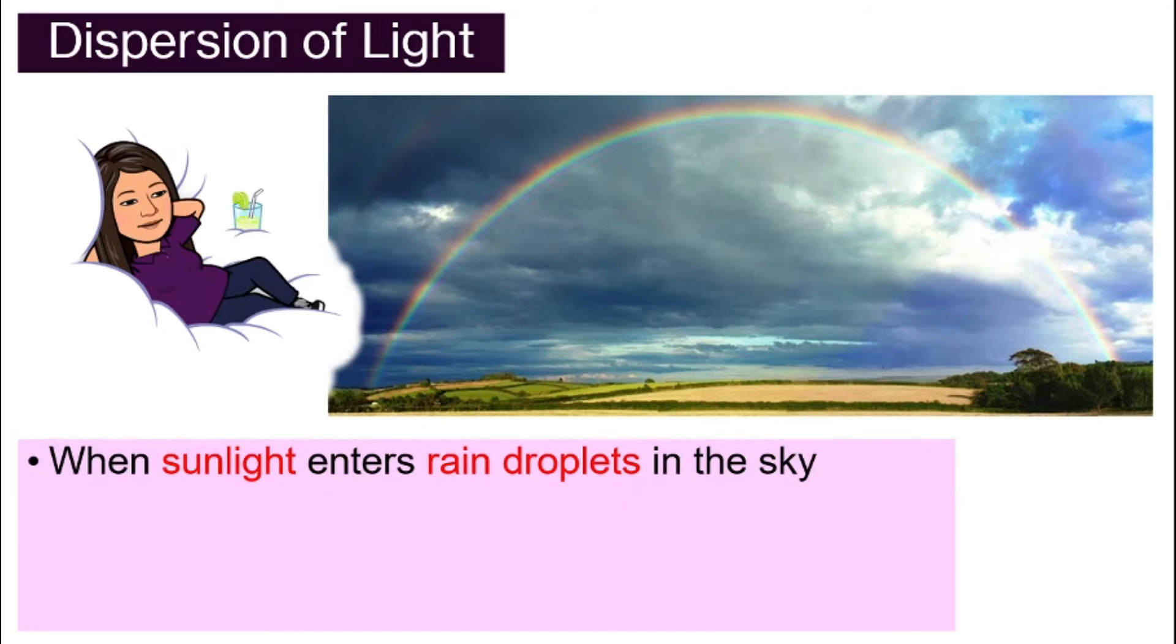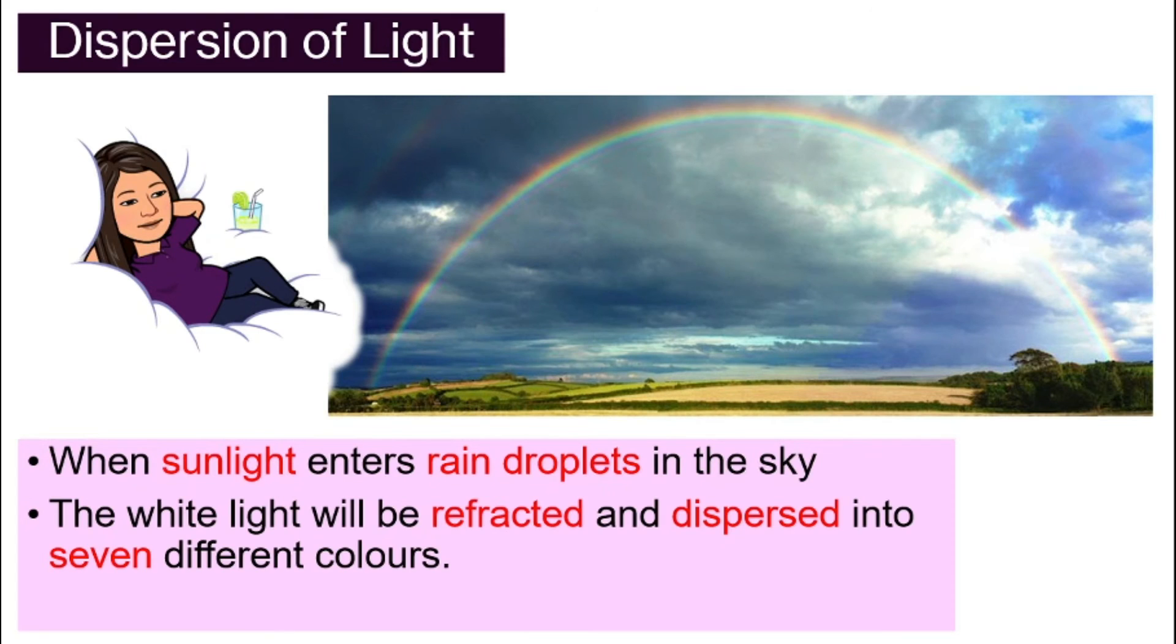So normally we see rainbow after the rain. And the white light will be refracted and dispersed into seven different colors. That's how you get your beautiful colorful rainbow. Do you like rainbow? JQD loves the rainbow.